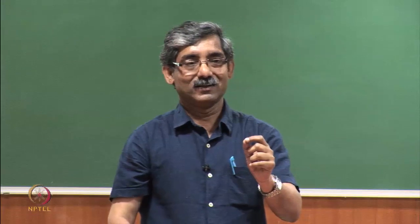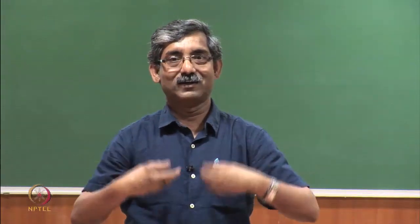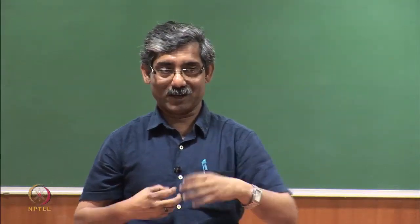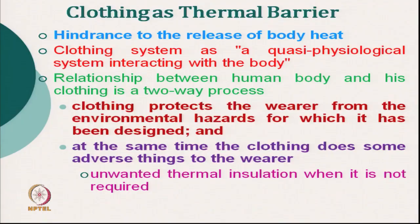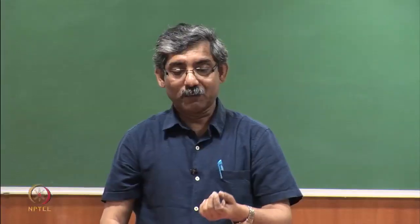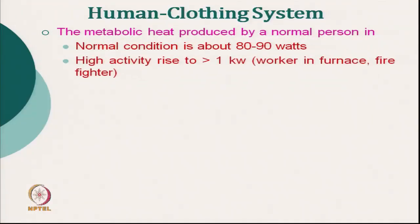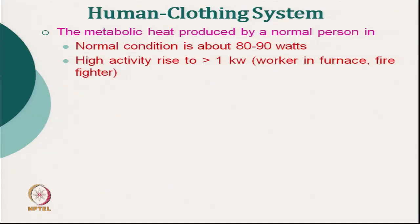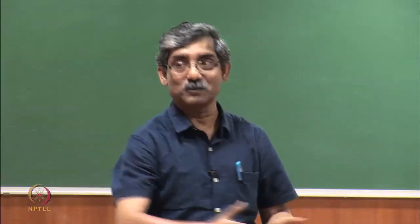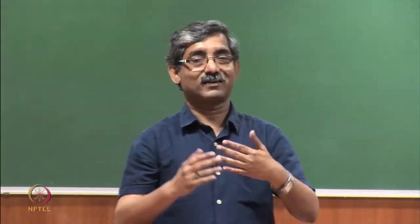The clothing layer has an adverse effect in that it does not allow the free flow of sweat. So we have to design clothing with higher moisture transmission. When sitting quietly in normal conditions, we produce 80 to 90 watts of metabolic heat, and that heat has to be transmitted. If clothing hinders that flow, it becomes a problem.